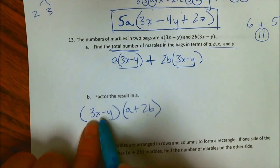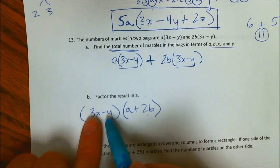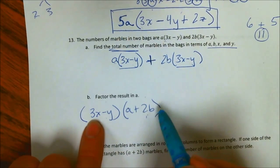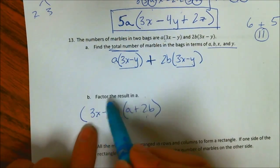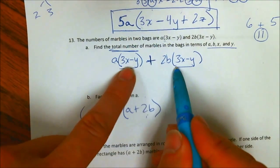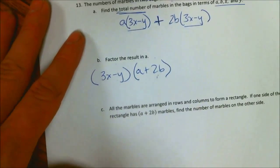If I multiply 3x minus y times A, I get A times 3x minus y. If I multiply 3x minus y times 2B, I get 2B times 3x minus y. So this is the factored result of these two. This is factored.